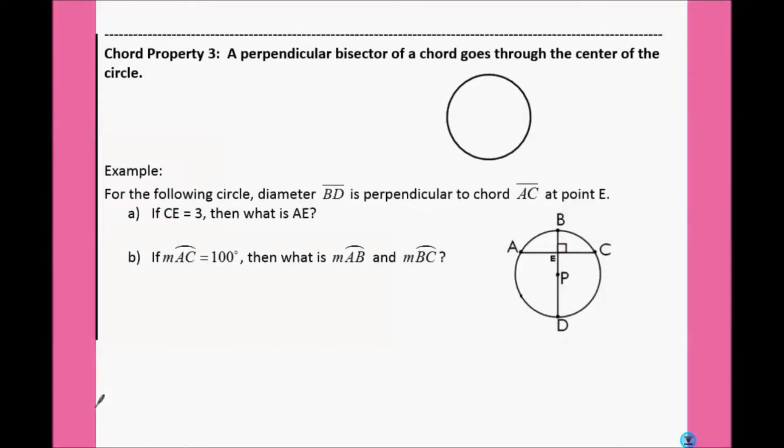And our final chord property, a perpendicular bisector of a chord goes through the center of the circle, so this means it would have to be a diameter or radius. So, here's our center. If we have a chord across here, and this goes through the center, it will bisect here and here, and it must be perpendicular.